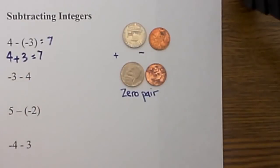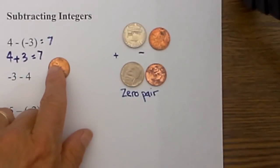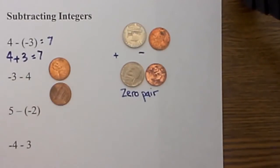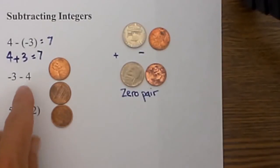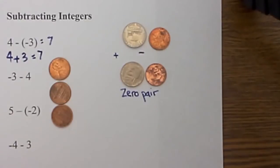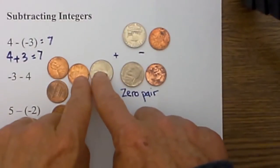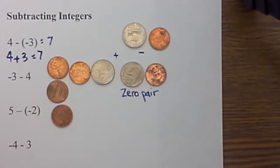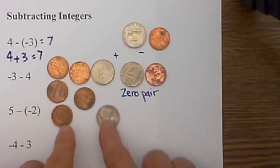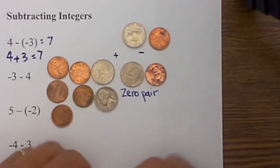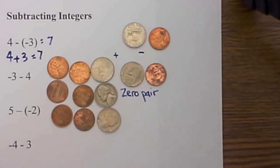Let's work the next one: we have negative three minus four. I am going to begin by putting down three negative numbers. But now I need to subtract four but I do not have anything to subtract, so I am going to put down a zero pair. I am going to put down four zero pairs because it needs to be four positive — there's one, two, three, and there is my fourth zero pair.